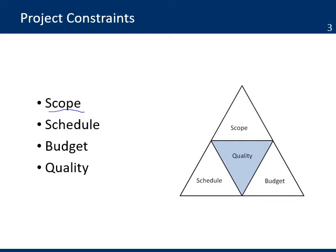Then, the schedule — the time the project has to deliver all the objectives. The budget — all the funds that are available. And quality — the standards to measure the quality of the project deliverables.